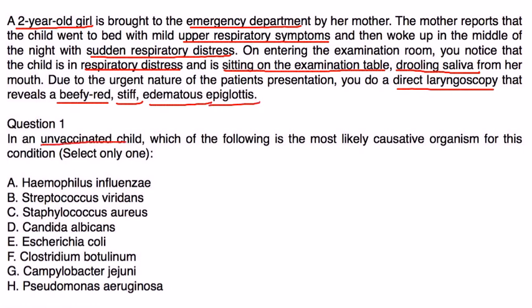In an unvaccinated child, which of the following is the most likely causative organism for this condition? Well, they give you a long list, and they say select only one, and as we mentioned in the video, it's Haemophilus.